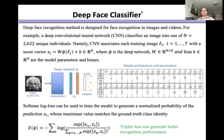For example, a deep convolutional neural network classifies an image into one of N unique individuals. Namely, CNN associates each training image Lt with a score vector xt, where phi is the deep network, W and b are the model parameters and biases. This architecture of deep face classifier shows the model parameters.